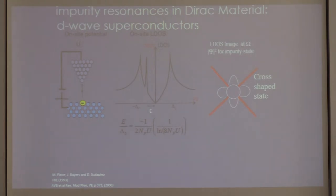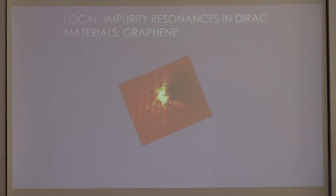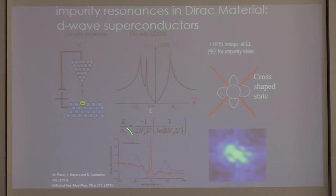This resonance has been seen experimentally in STM — Ali Yazdani was one of the pioneers, including Shuheng Pan and J.C. Seamus Davis. This came at about the same time when STM was first powerfully applied to high-Tc superconductors, about 20 years ago. Back then we were looking at the effects of defects — I thought we were solving the superconducting problem, and didn't realize we were actually solving the Dirac resonance problem.